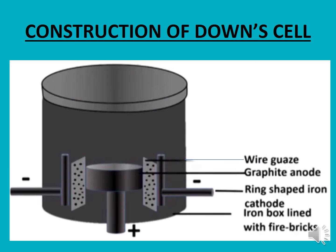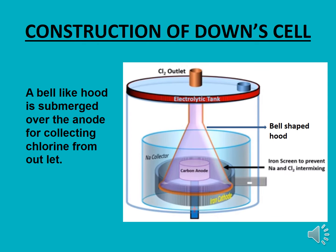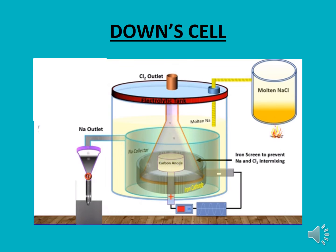There is a wire gauze for the separation of the anode and cathode. We have a sodium collector which collects the sodium after its preparation at the cathode. There is also a bell-like hood submerged over the anode for collecting the chlorine gas; without this hood, chlorine gas could mix with sodium metal and we would be unable to get a pure product. There is an opening in the electrolytic cell for collecting the molten NaCl electrolyte, a chlorine outlet on the hood for collecting the chlorine gas formed at the anode, and a sodium outlet for collecting the molten sodium metal formed at the cathode.